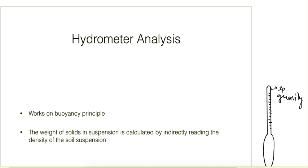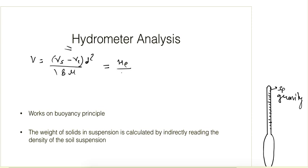The next part of sedimentation analysis is the hydrometer method. This also follows Stokes law, meaning the settling velocity is calculated using Stokes law, which gives the velocity as (γs - γl) d² / 18μ, equal to He / t. The value He, which was constant in the pipette method, is not constant here and will vary with time, normally increasing with time.